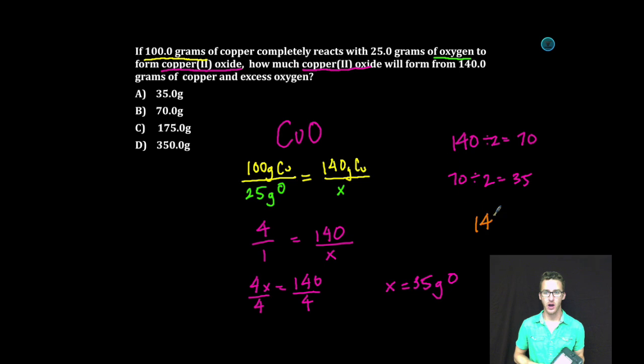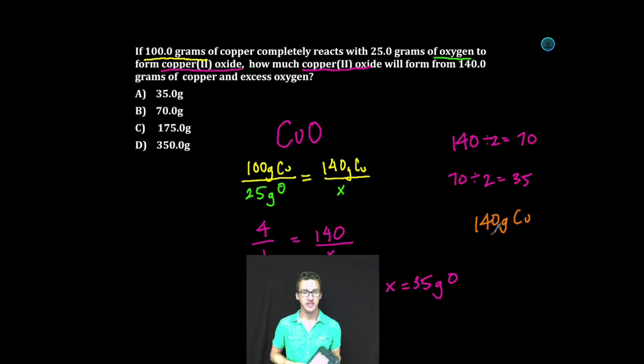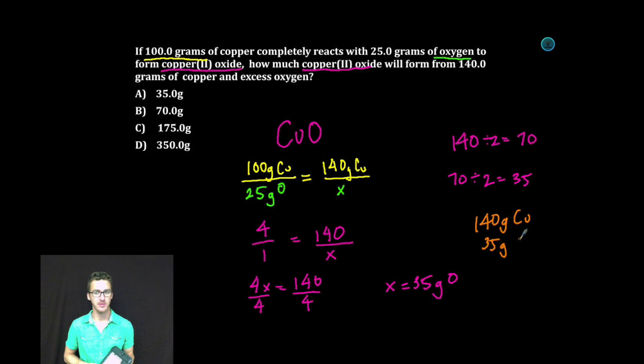So to finish things up, we're going to take 140 grams of copper. It's going to react with 35 grams of oxygen. So the total mass of the compound is going to be 175 grams of copper 2 oxide. Boom. That is our final answer. Answer choice C.